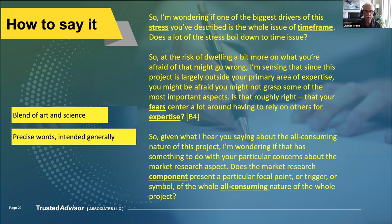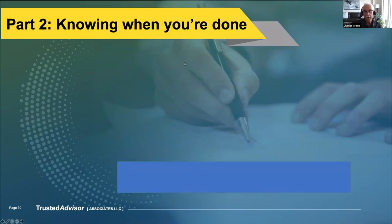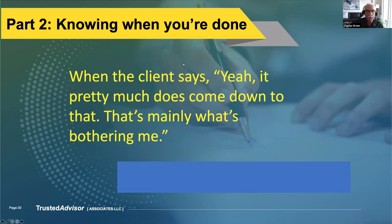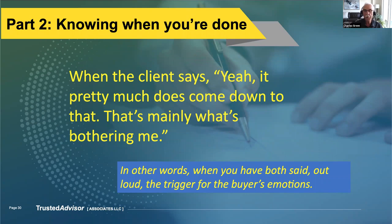How do you know when you're done with Part 2? When the client says something like, 'Yeah, pretty much does come down to that — yes, that's mainly what's bothering me.' They're getting to some kind of resolution. When you have both said out loud the trigger for the buyer's emotions, that's when you know you're done with Part 2. Part 2 usually doesn't take that long — the real trick is doing a great job of Part 1.